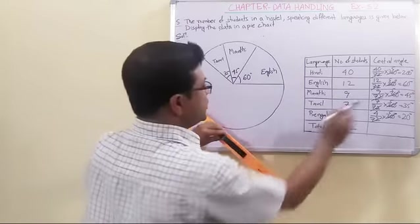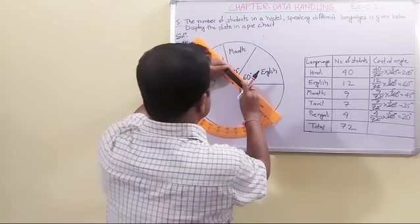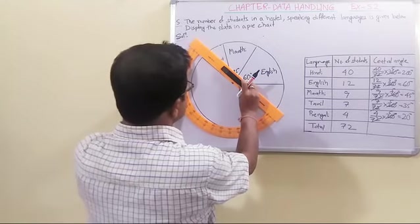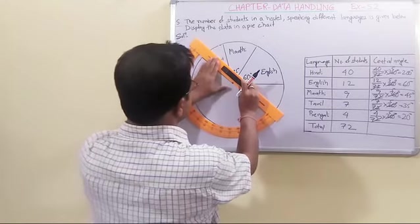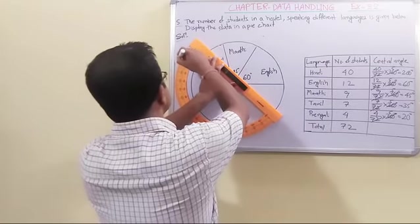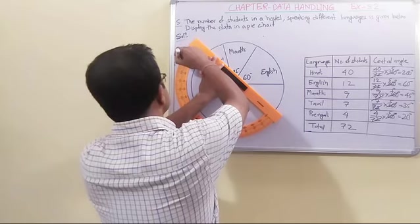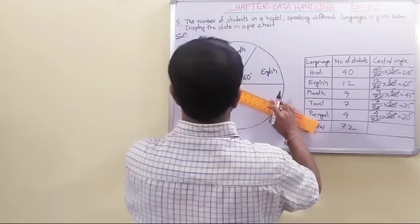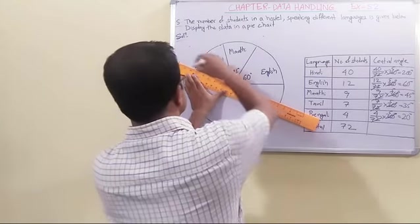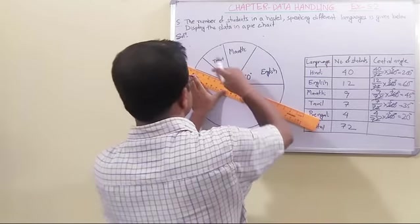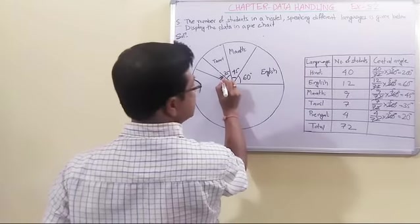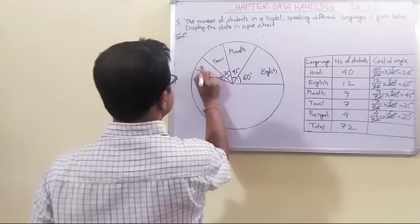Next is 20 degrees. For 20 degrees, let us raise this protractor like this. You can see this is our reference line. So let us adjust it. This 20 degrees. This is 0. This is 10. This is 20 degrees. Now, let us join it. This is from here. You will see this is straight length. So this is 20. This is the language Bengali.